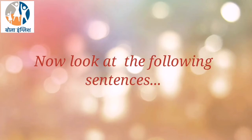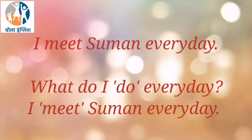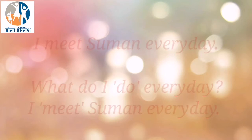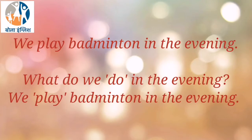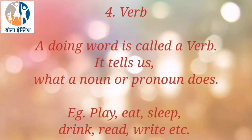Now look at the following sentences. 'Shreya hugged her daughter.' What did Shreya do? She hugged her daughter. 'I meet Suman every day.' 'We play badminton in the evening.' The words hugged, meet, and play in these sentences are verbs. What is a verb? A doing word is called a verb — it tells us what a noun or pronoun does. For example: play, eat, sleep, drink, read, write, etc.